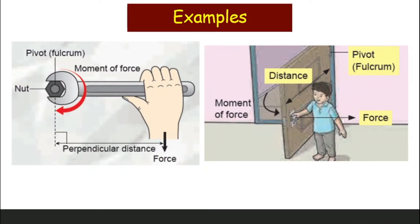Here are two examples where you can observe the moment of force. On the left, you see a wrench used to loosen a nut. The wrench is actually a lever — it has a fulcrum as the fixed point, and you apply your effort force here. This force on the wrench at a fixed point causes the wrench to spin or rotate around the fulcrum, so you observe the moment of force.